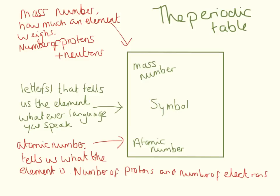We're now going to switch to our periodic table. If you have a copy, fantastic — if not, don't worry. On your periodic table there are lots of boxes, and in the boxes there could be two numbers, a symbol, and maybe a name. The mass number is generally the number at the top — the larger of the two — and it tells us how much an element weighs. Your mass number is equal to the number of protons plus the number of neutrons. It tells us how much that nucleus in the middle weighs.